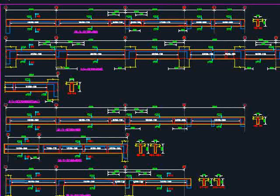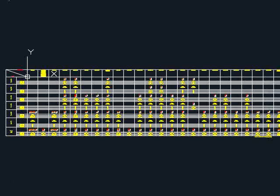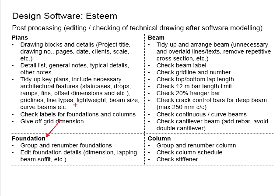These are the beams as produced by the software, which you need to process and arrange neatly in the drawing for easy reference. Next, for columns, you will need to do some grouping and renumbering, then produce the column schedules. Check if there are any necessary stiffness provisions and ensure relevant information is provided — reducing the number of distinct column types from what the software initially produces.